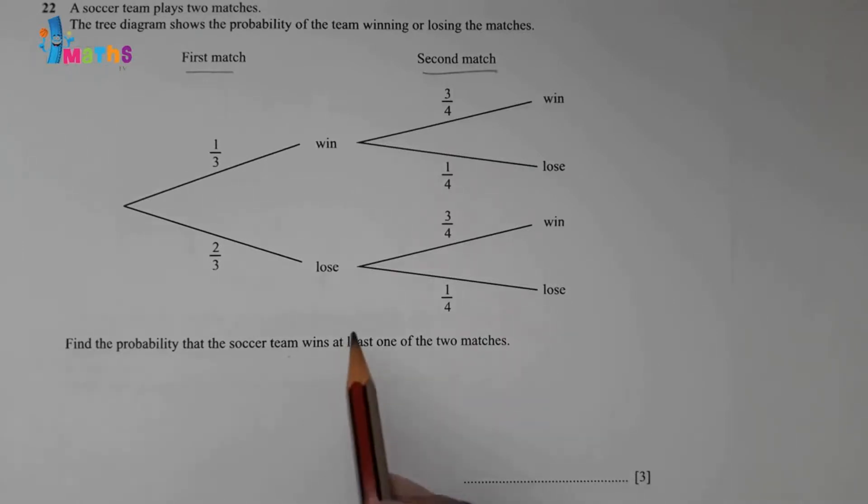The question is: find the probability that the soccer team wins at least one of the two matches. In case of probability questions, wording is very important. At least one means one or more than one wins are included. So what we will do, we will check the probability of wins.